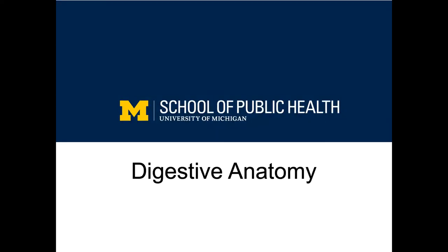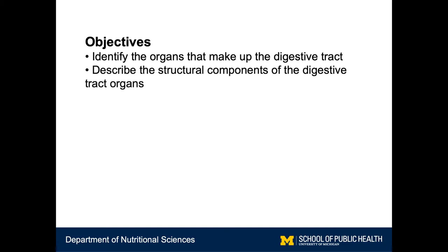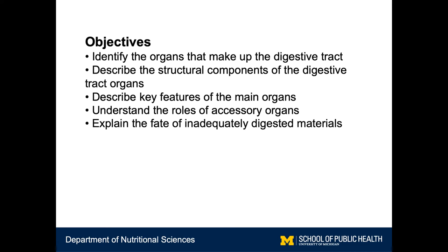In this video I'm going to describe some of the basic building blocks of the digestive system and how its anatomy is important for the digestive process of all macronutrients. The objectives of this video are to identify the organs that comprise the digestive tract, to describe the structural components of the digestive tract organs, describe the key features of both the main and accessory organs, and to explain the fate of inadequately digested materials.